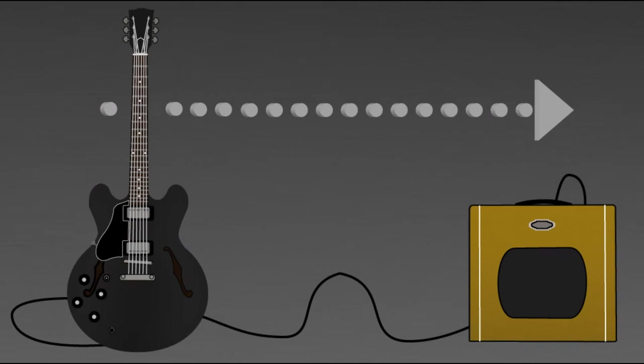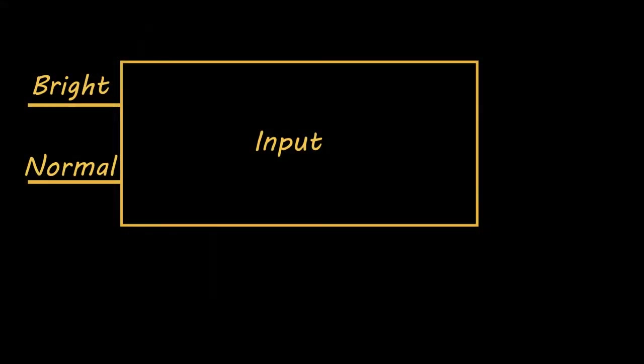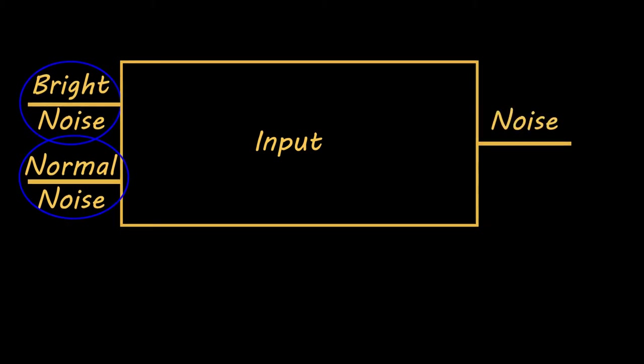Here we have the basic input block. We know we have two channels coming in: normal and bright. And of course what comes in on those is the input signal from the guitar. Or as my dad would call it noise. And next of course comes the output which is just noise, either coming from the bright or the normal or both inputs at the same time.